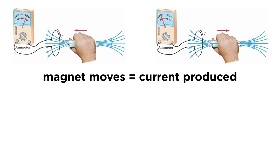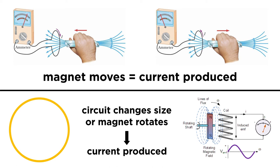Moving the bar towards and away from the circuit would induce a current, however, as would changing the size of the circuit, or rotating the bar end over end.